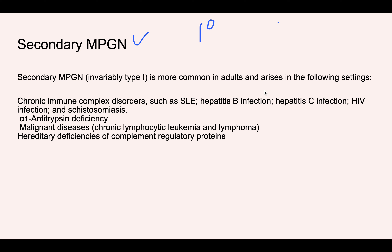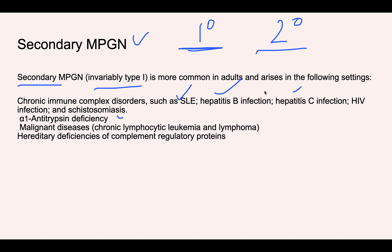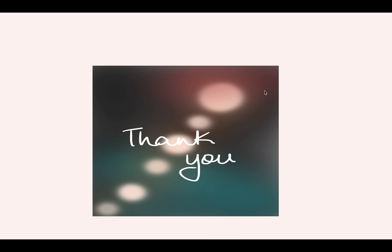Secondary MPGN has a known cause and mostly leads to Type 1 morphology. Diseases causing secondary MPGN include: SLE, hepatitis B infection, hepatitis C infection, alpha-1 antitrypsin deficiency (which can also cause emphysema), certain malignancies, and hereditary deficiencies in complement regulatory proteins. This concludes the discussion on MPGN.